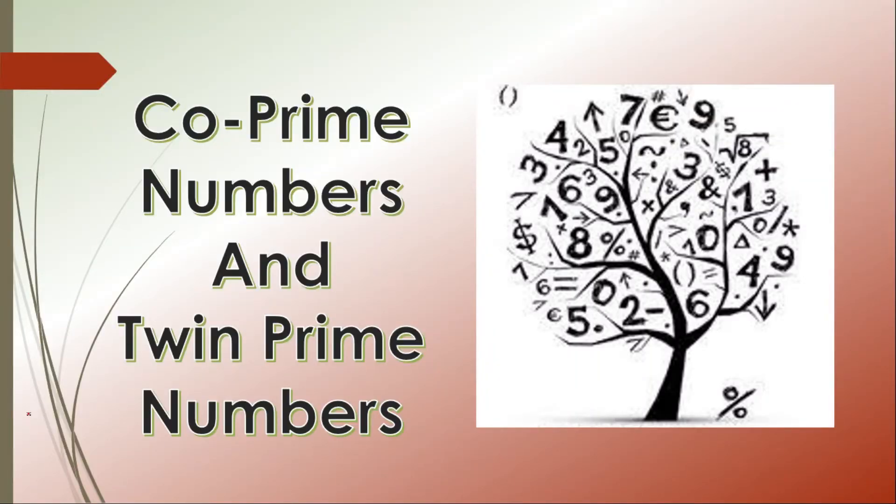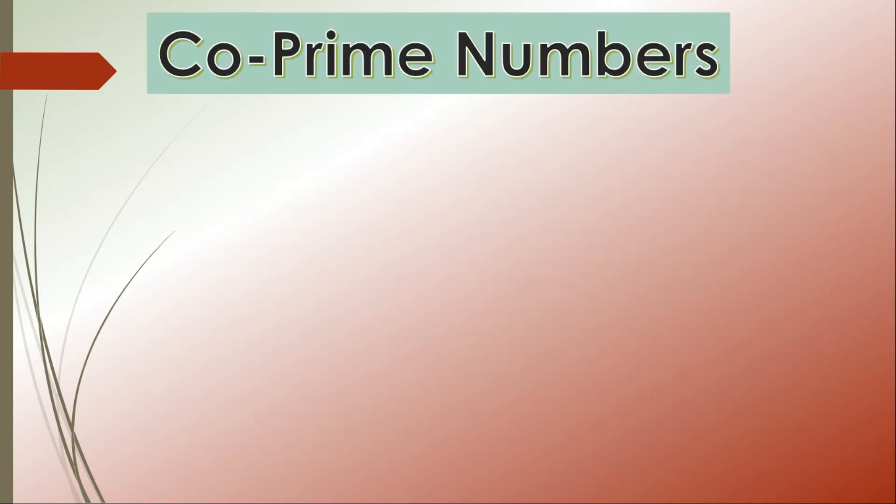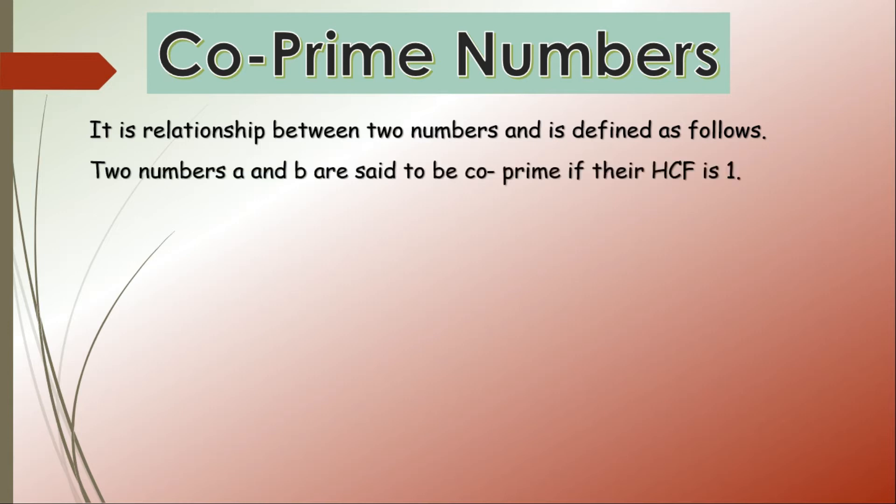So now we will learn about co-prime numbers and twin prime numbers. Co-prime numbers - it is a relationship between two numbers and is defined as follows: two numbers a and b are said to be co-prime if their HCF is 1. Let us see through an example.